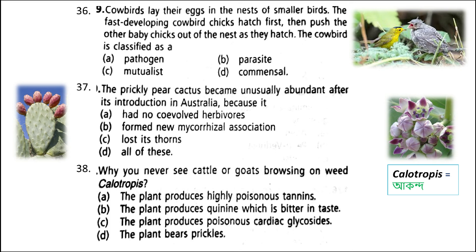Next: the prickly pear cactus became unusually abundant after its introduction in Australia because it had no co-evolved herbivores. Co-evolution is caused by the selection pressure that each of the two species exerts on the other. Since there was no co-evolved herbivore with prickly pear cactus, it became abundant in Australia.